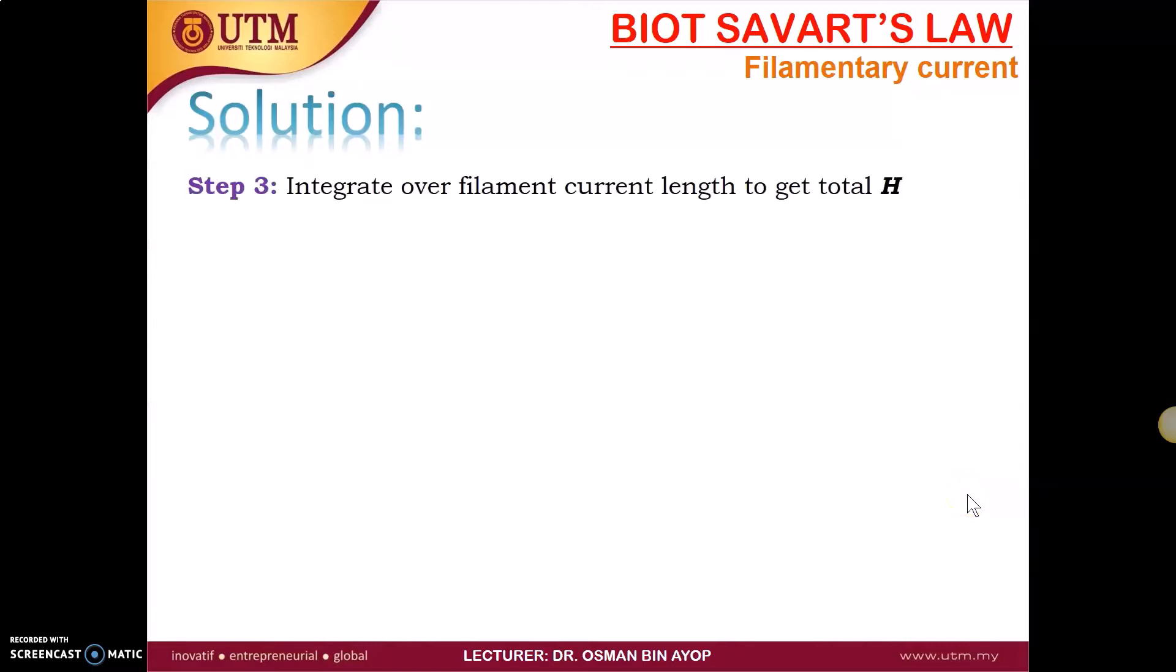The next step is we have to integrate over filament current length to get total H. So this is the formula. The H equal to the integration of I DL, this is our current element, cross product with the distance vector divided by 4 pi R square.